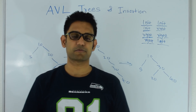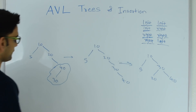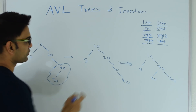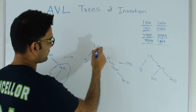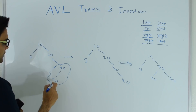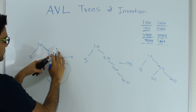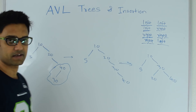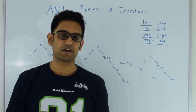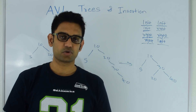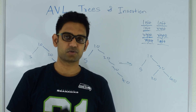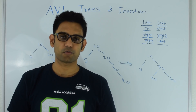Next let's analyze the time complexity for insertion. In the worst case, the number of rotations is proportional to the height of the AVL tree. Each node may need at most 2 rotations, and with height O(log n), the total work is O(log n). So insertion into an AVL tree is O(log n). Since AVL tree is a balanced tree, search into an AVL tree is also O(log n).